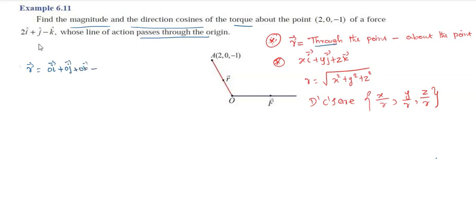Minus the point A. Therefore, r-vector equals minus 2i-vector plus 0j-vector plus 1k-vector, which equals minus 2i-vector plus 0j-vector plus 1k-vector. So r-vector is equal to minus 2i plus 0j plus 1k.